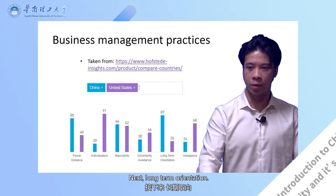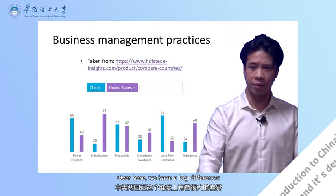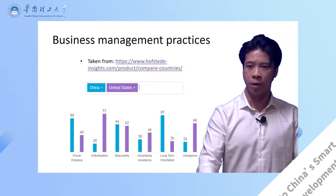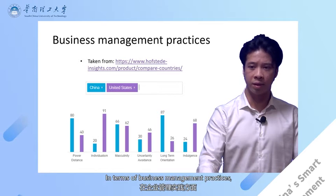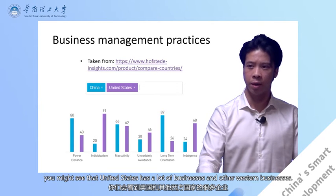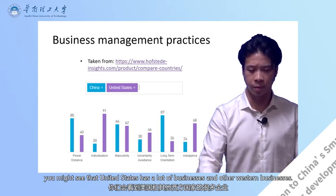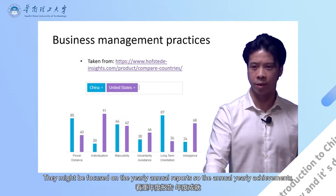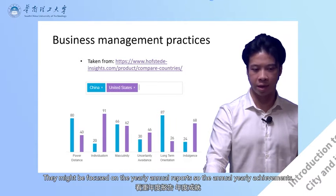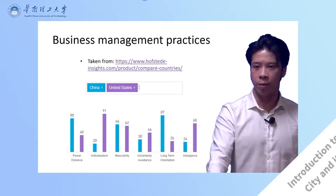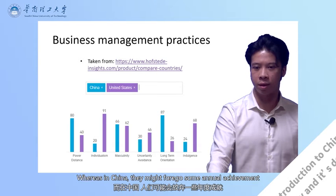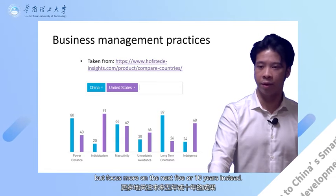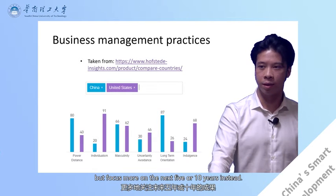Next, long-term orientation — again, here we have a big difference, with China being more long-term oriented and the United States being more short-term. In terms of business management practices, you might see that the United States and other Western businesses are focused on yearly annual reports and annual achievements. Whereas in China, they might forego some annual achievement but focus more on the next five or ten years instead.